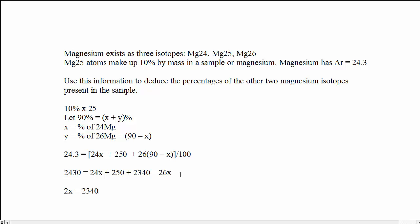2340 plus 250 minus 2430. Which is equal to what? 2340 plus 250 minus 2430 equals 160.